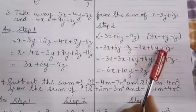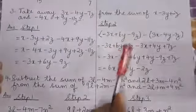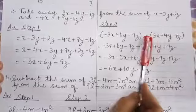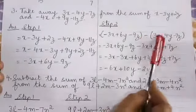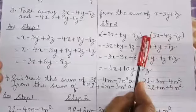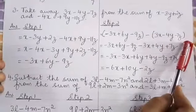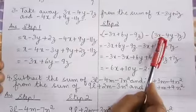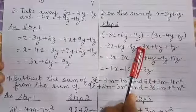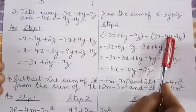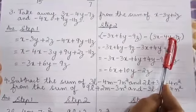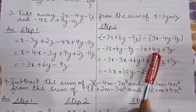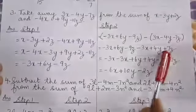The next step is to remove the brackets. We have minus 3x plus 6y minus 9z. The terms in the second bracket are preceded by a minus sign, so every term in that bracket must be multiplied by this minus sign. 3x is just plus 3x, so minus into plus gives minus 3x. Minus 4y: minus into minus gives plus 4y. Similarly, minus into minus gives plus 7z.